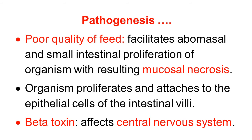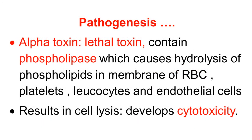The beta-toxin affects the central nervous system and produces CNS symptoms. The alpha-toxin is a lethal toxin containing the enzyme phospholipase. Phospholipase causes hydrolysis of phospholipids in the membranes of red blood cells, platelets, leukocytes, and epithelial cells, causing great destruction of cells, cell lysis, and cytotoxicity. This is the dangerous stage of the pathogenesis.